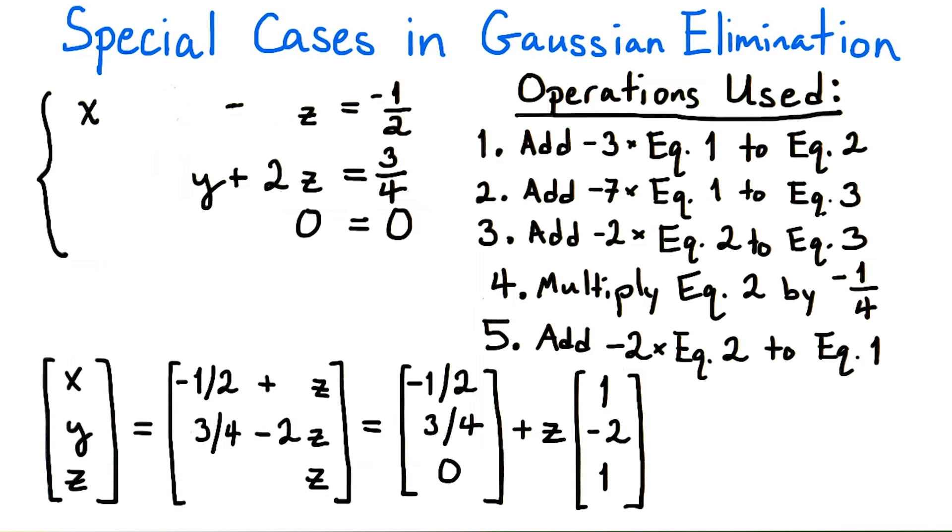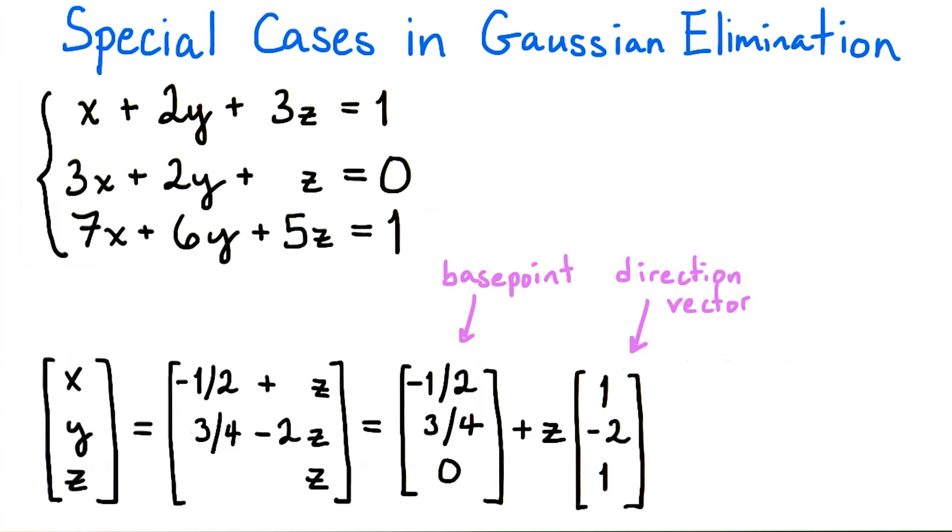Another way we can write this is to split the vector into a sum of a constant vector and a vector with a z term. This form should be familiar. It is how we parameterized a line previously, except now we're using z instead of t for the parameter name. The base point of this parameterization is negative 1 half, 3 fourths, 0. And the direction vector of this parameterization is 1, negative 2, 1.